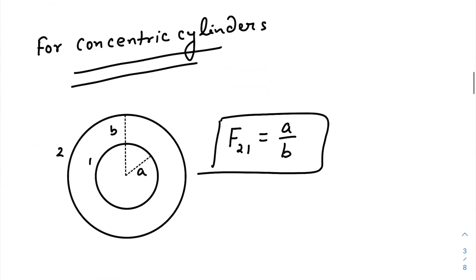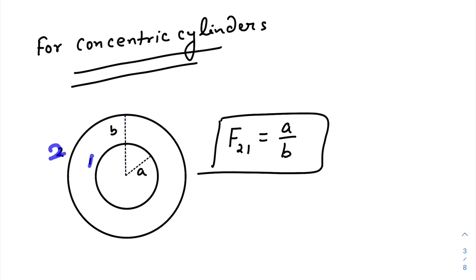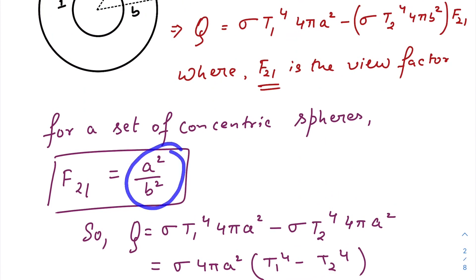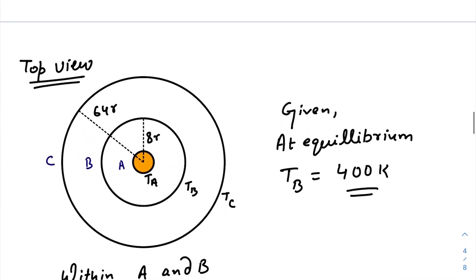Similarly, for concentric cylinders — we are looking at the top view of two concentric infinite-length cylinders with inner radius a and outer radius b. The view factor F₂₁, representing energy emitted by the outer cylinder falling on the inner one, is a/b (inner radius divided by outer radius). Remember: for spheres it is a²/b², and for cylinders it is a/b.